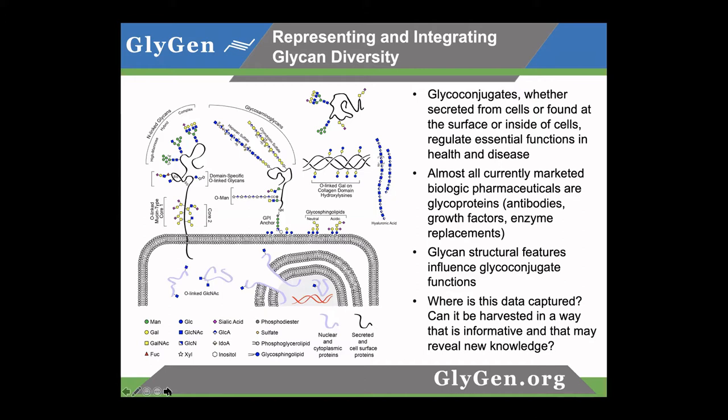These glycoconjugates, whether secreted, found at the surface, or inside cells, are essential for regulating important functions and contribute to both normal tissue function as well as disease. Glycans are essential not just for normal cellular function, but also as components of very important biologic pharmaceuticals — antibodies, growth factors, enzyme replacement therapies — all centered around glycoproteins. The glycans are important for the stability and function of those biologics. There is a lot of data showing that glycan structural features influence the functions of the proteins or lipids to which they're attached.